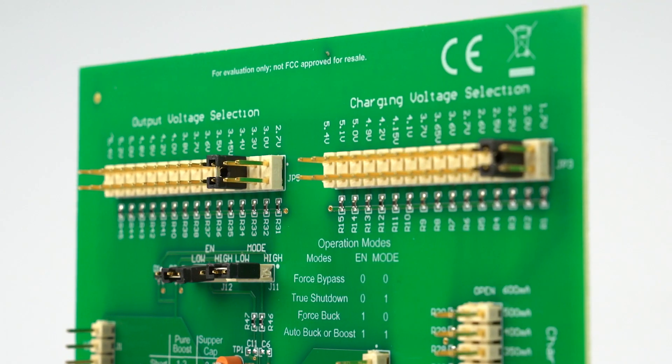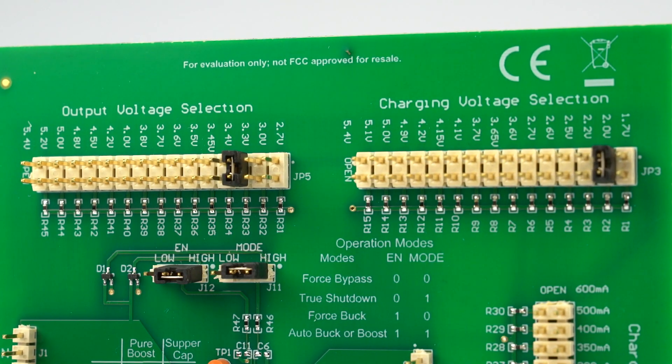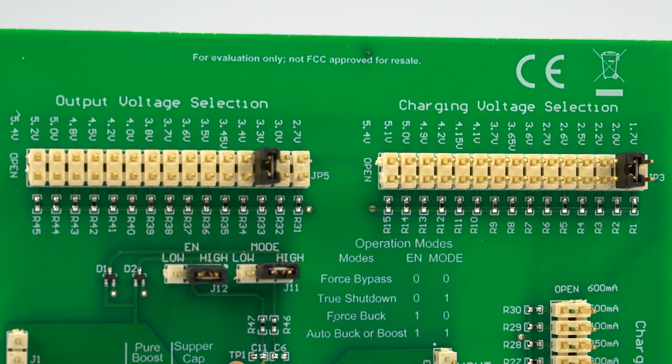Integrating a buck charger and a boost converter into a single integrated circuit removes the need for a discrete buck charger, inductor, and two external capacitors, which can reduce component count by 50% and free up board space.